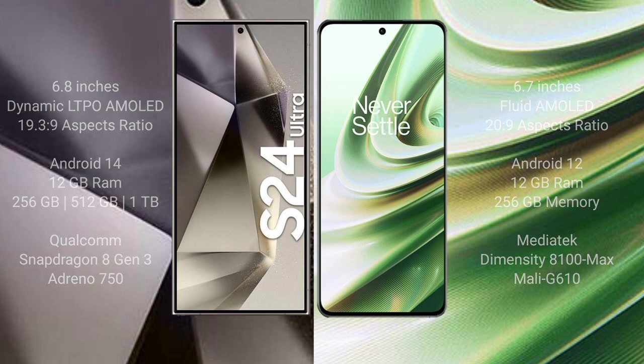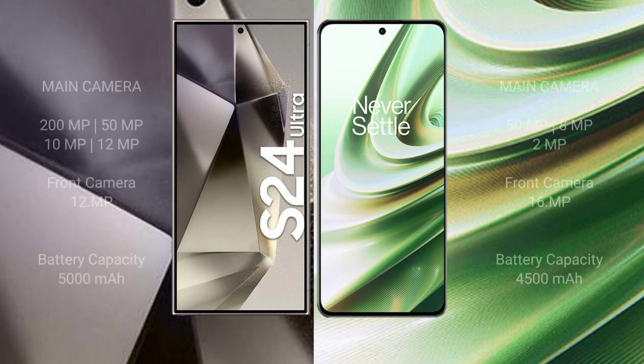Samsung Galaxy S24 Ultra features a quad rear camera setup: 200MP plus 50MP plus 8MP plus 2MP, and a 12MP front camera. OnePlus 10R features a triple rear camera setup: 50MP plus 8MP plus 2MP, and a 16MP front camera.